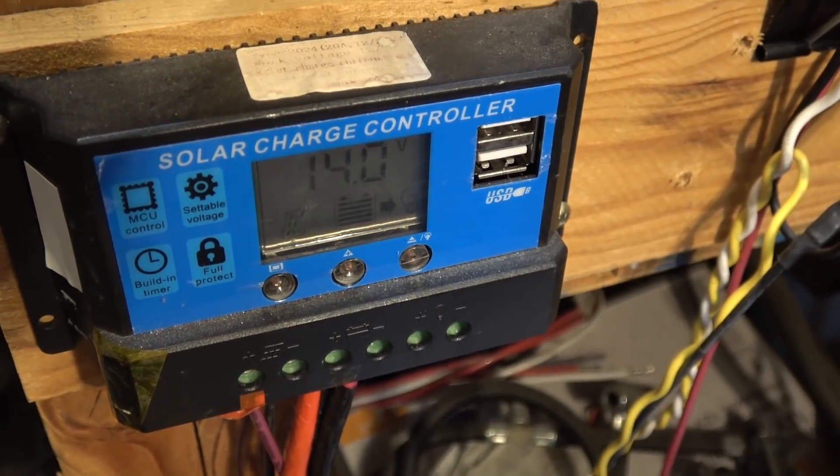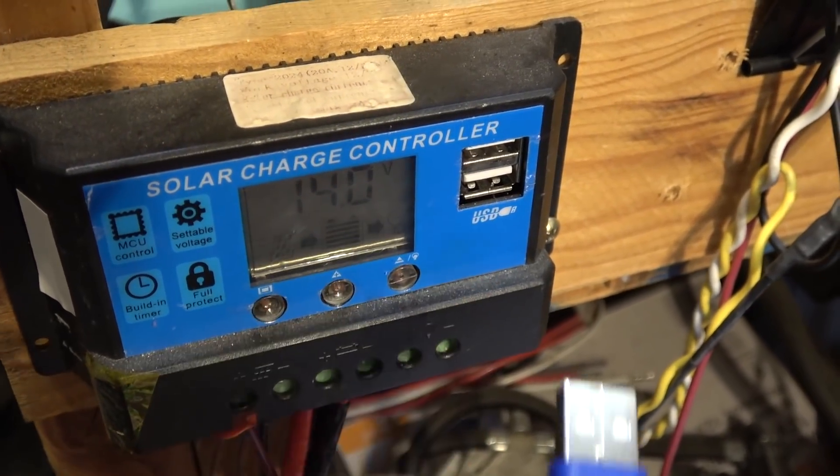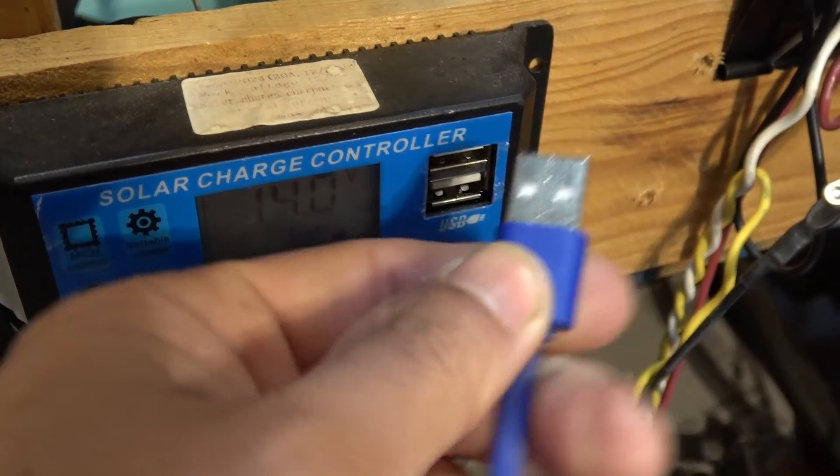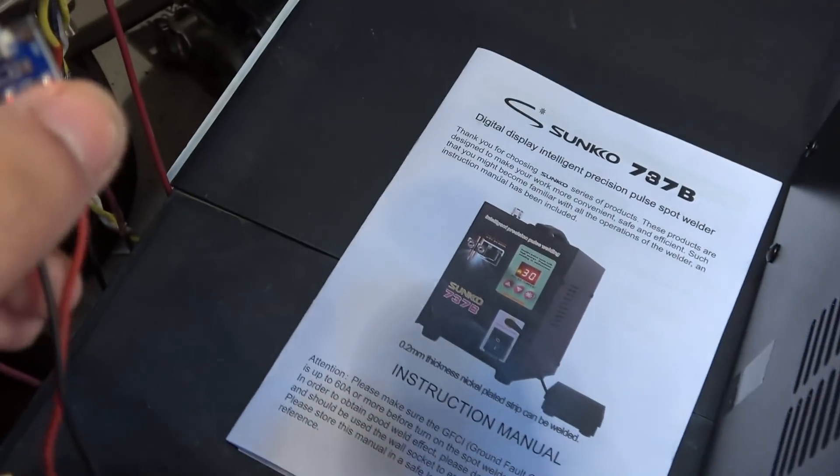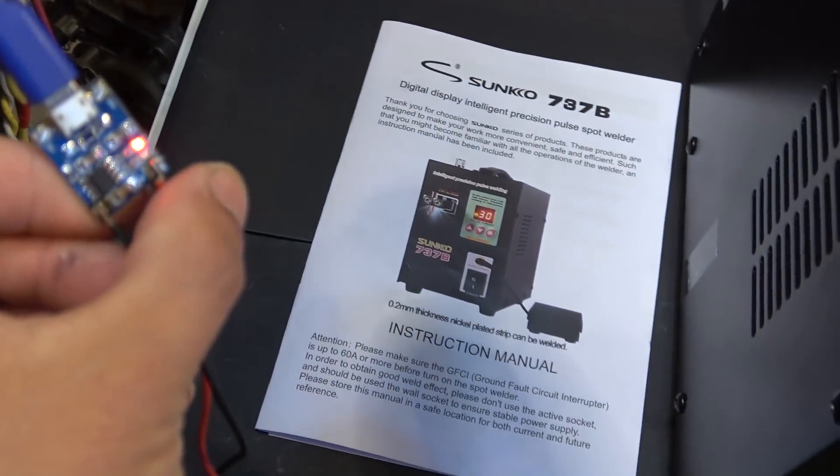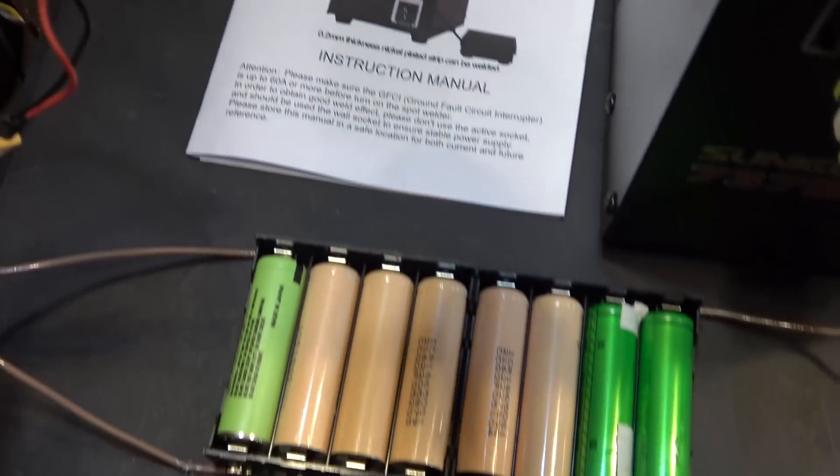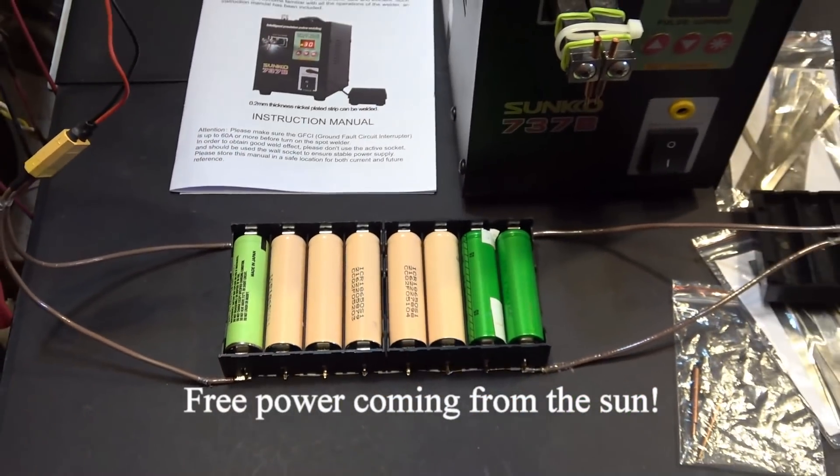And the other end of a USB, I'm going to plug it into any USB source. So here's my solar charge controller, got a couple of USB ports, so I'm just going to plug it in here like so. Now I see a red light, it is charging eight batteries at the same time.